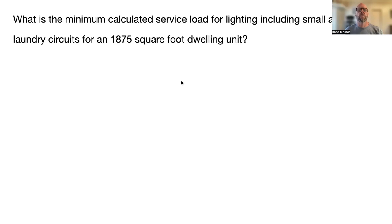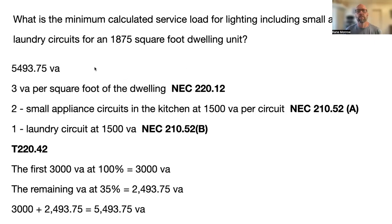Next question: what is the minimum calculated service load for lighting including small appliance and laundry circuits for an 1875 square foot dwelling unit? The answer is 5493.75 VA. Go to NEC 220.12 — for a single or multi-family dwelling, you calculate 3 VA per square foot. So we take 1875 and multiply by 3, and set that number aside.